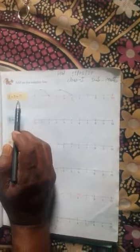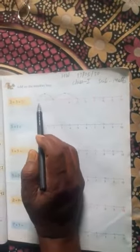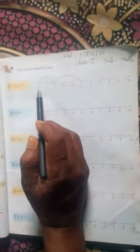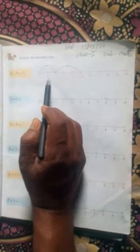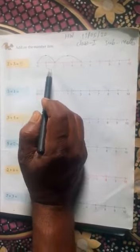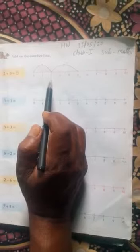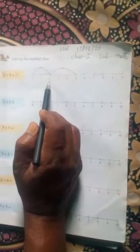We should add 2 plus 3. First count 2 numbers after 0: 1, 2. You will reach 2.